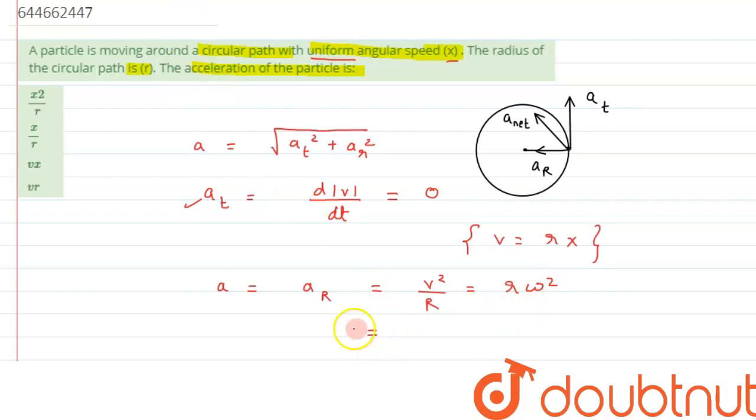So from here what we can write is acceleration equals to, if we use this formula, instead of v we can write r x squared using the relation above. Let's write it as capital R squared x squared divided by r. So what we are left with is r x squared, and this can be written as r times x times x.